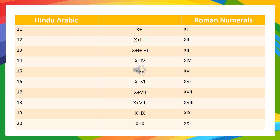14 means 10 plus 4, so we write it as XIV. 15 means 10 plus 5, so we write it as XV. 16 means 10 plus 6, so we write it as XVI. 17 means 10 plus 7, so we write it as XVII.